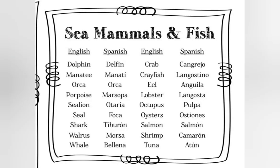For this one we're going to do sea mammals and fish in Spanish. Dolphin: delfín. Manatee: manatí. Orca: orca. Porpoise: marsopa.